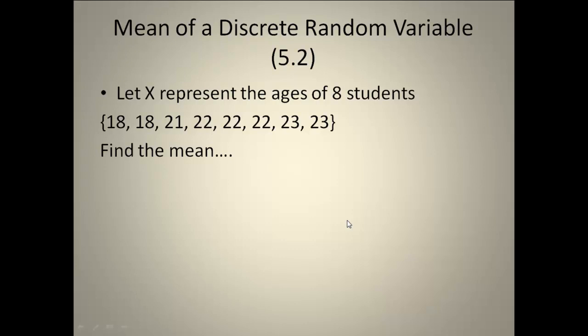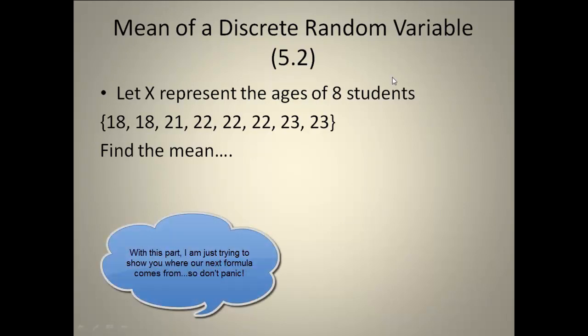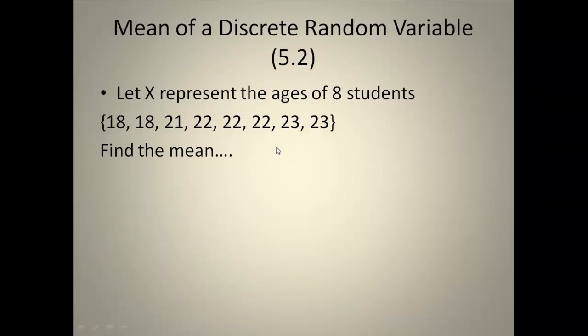Okay, section 2. Now we're going to look at the mean of a discrete random variable. The first thing is we're going to let X represent the ages of 8 students. I've given you 8 different ages here. First thing I would ask you to do is just find the mean.